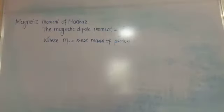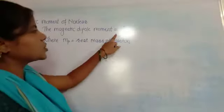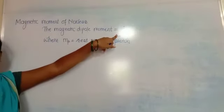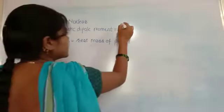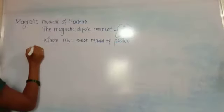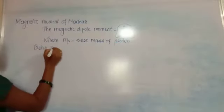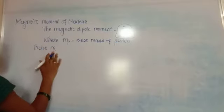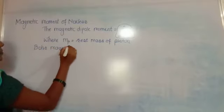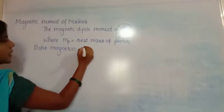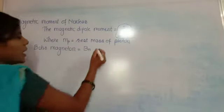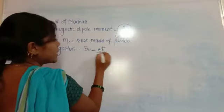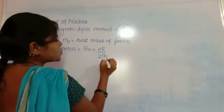The quantity eħ/2mₚ is known as the nuclear magneton, abbreviated as BN. It is noted by the letter BN because this is about the nucleus, and it is defined as eħ divided by twice mₚ.